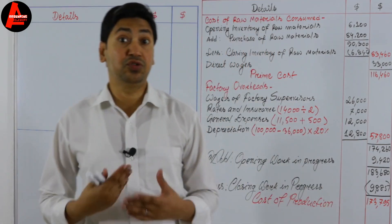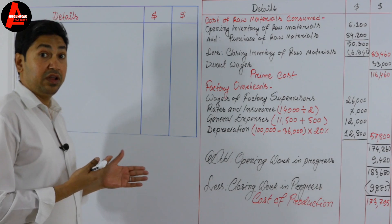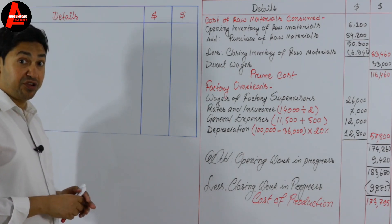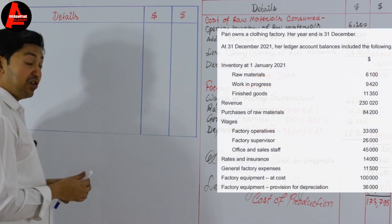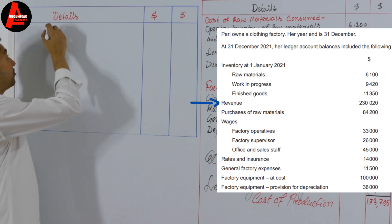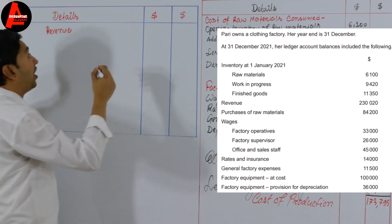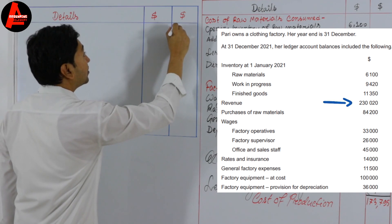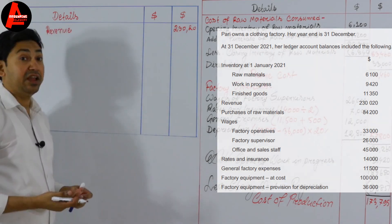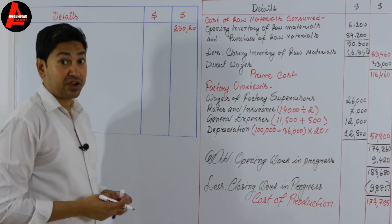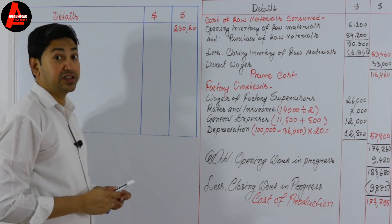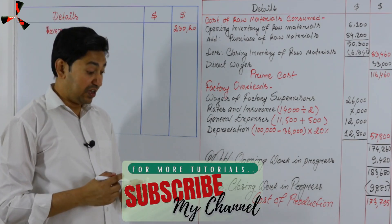The first item to calculate is gross profit of the trading account. First of all we need to write sales revenue. In the question we have sales revenue — the amount is 230,020 dollars.